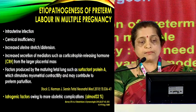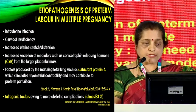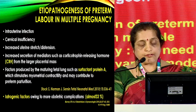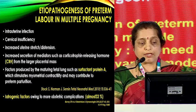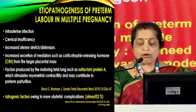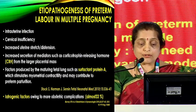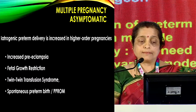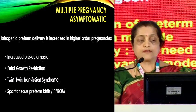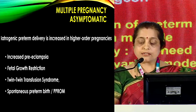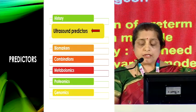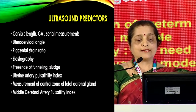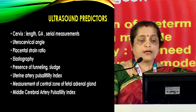What causes preterm birth in multiple pregnancy? Intrauterine infections, cervical insufficiency, increased uterine stretch or distension, increased release of corticotrophin-releasing hormone, and surfactant protein A — which increase myometrial contractility and contribute to preterm parturition. Almost one third of these pregnancies have iatrogenic causes. Twin pregnancies and triplets lead to increased preeclampsia, fetal growth restriction, TTTS, and spontaneous preterm births including PPROM. Let us look at the ultrasonic predictors — the cervix has been extensively studied: its length, gestational age, serial measurements, and more.